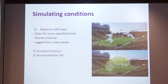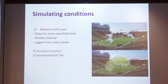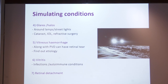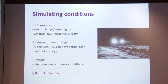Simulating conditions for flashes include migraine with aura — it stays for a specified time, mostly bilateral, with zigzag lines or heat waves. Occipital tumors and vertebrobasilar TIA can also present with flashes. Glare and halos around lamps can occur in cataract, intraocular lens, and post-refractive surgery. Vitreous hemorrhage along with PVD can have retinal tear. Vitritis is very important when evaluating a floater — infections and autoimmune conditions must be ruled out. And retinal detachment must be considered when a shadow accompanies these symptoms.